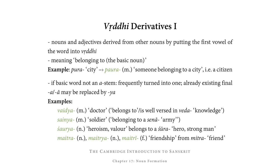If the basic word is not a short-a stem, it is frequently turned into one, and an already existing final a or ā may also be replaced by ya. For example, we get vaidya, meaning doctor or a learned person, on the basis of veda, which means knowledge. We take veda, put the first vowel e into vṛddhi giving ai, and the final a of veda is replaced by ya — so we get vaidya, someone well-versed in veda. On the basis of senā, we get sainya, where again the first vowel is put into vṛddhi and the final a is replaced by ya, giving us a soldier — one who belongs to a senā, an army.